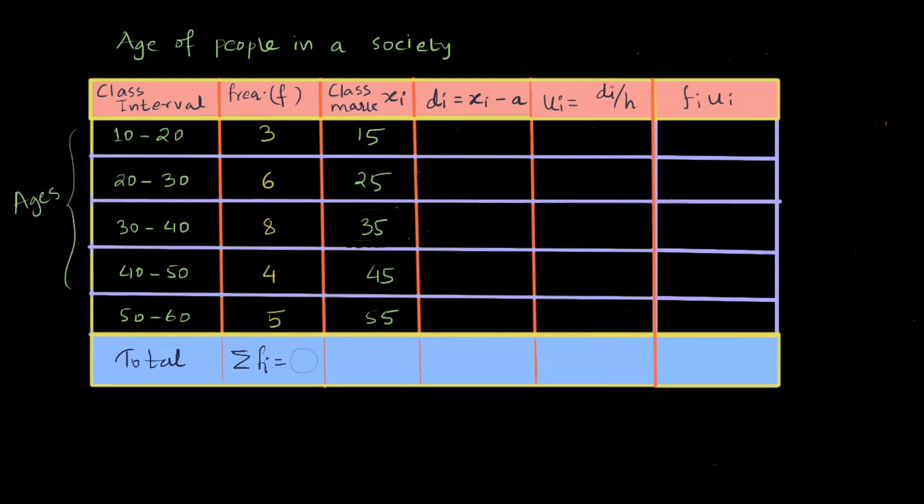We are going to learn about finding mean by step deviation method. When finding mean by assumed mean method gets difficult, maybe because you cannot solve multiplication of larger numbers, then it's recommended that you may use step deviation method.